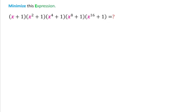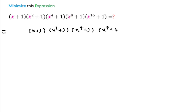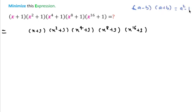To minimize, first I will write this equation: (x+1)(x²+1)(x⁴+1)(x⁸+1)(x¹⁶+1). And I will use the formula (a-b)(a+b) = a²-b² for minimizing this.